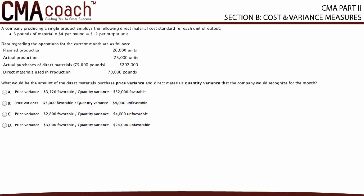Welcome back to a new multiple choice question video. In this video we'll go over CMA Part 2 Section B, cost and variance measures. This topic is in the materials and labor manufacturing input variances.